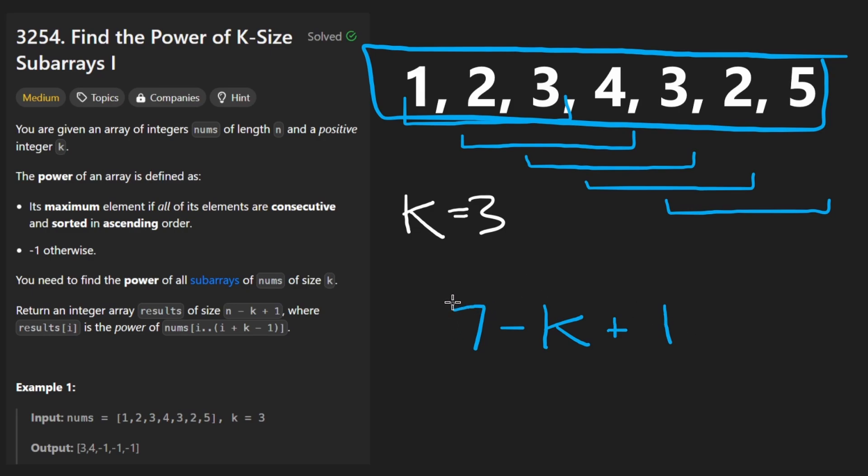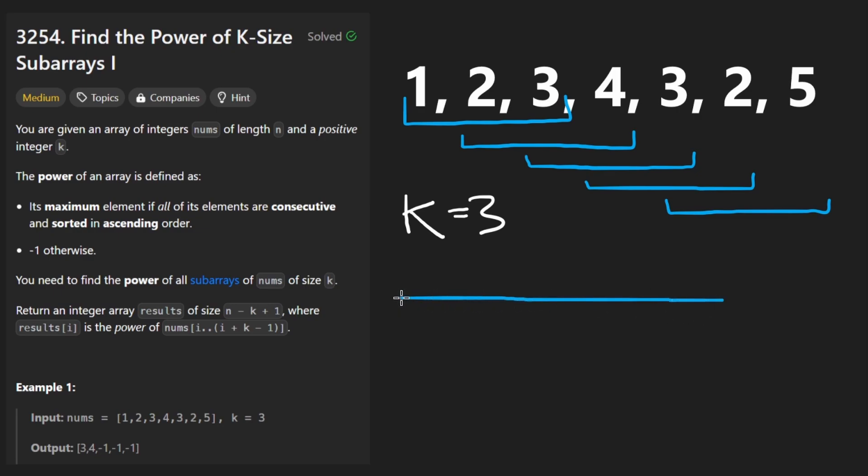This is minus k plus 1. So just substitute this 7 with n, the variable which represents the length of the input. But anyways, with each of these windows, we want to actually build an output array. So it's going to be the size that I just talked about earlier, depending on the number of windows we have.